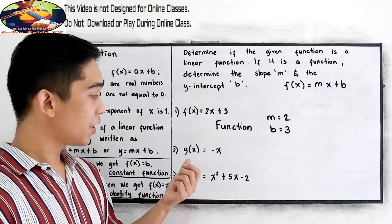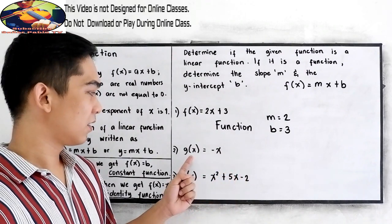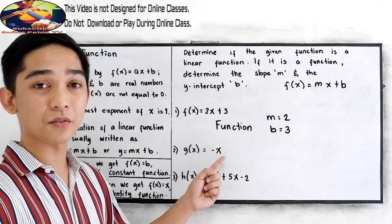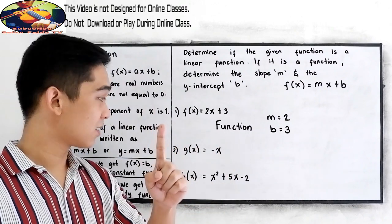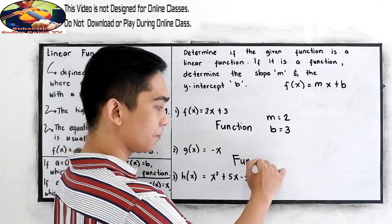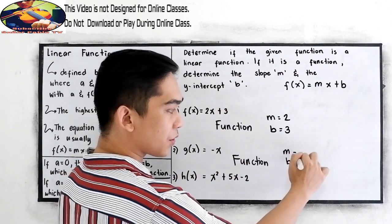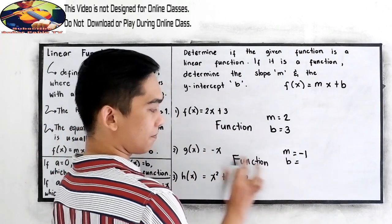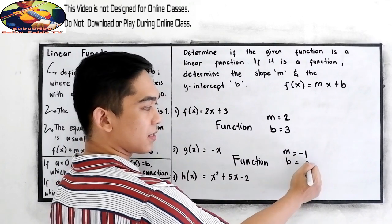Next, number 2: g of x is equal to negative x, which is also y is equal to negative x. Function or not? Check the exponent — it has a degree of 1. Therefore, number 2 is a linear function. Now let us find the slope and the y-intercept. Our slope is negative 1, and our y-intercept is 0.